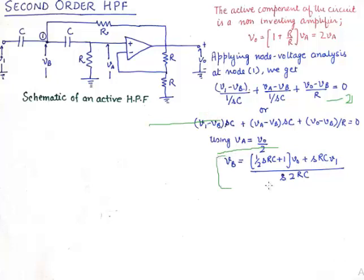VB will be this after some amount of rearrangement. And we will need to put VA to be equivalent to V0 by 2 from the first equation that we have inferred from the previous discussion. Finally VB comes out to be this configuration.